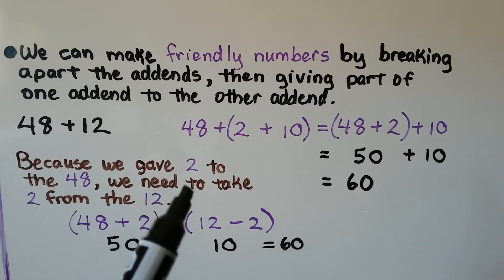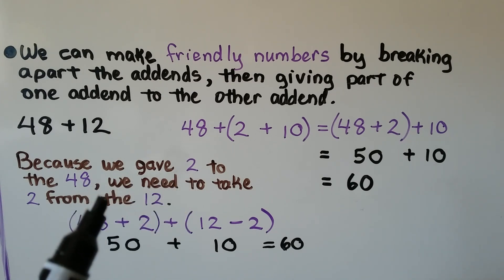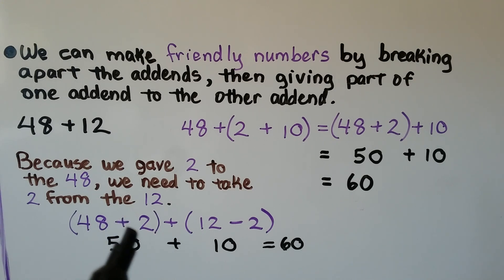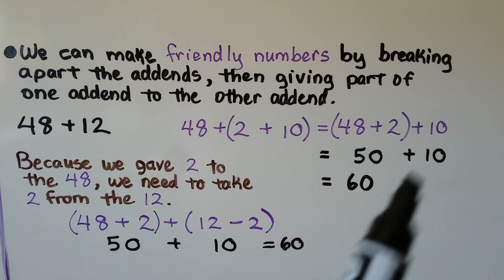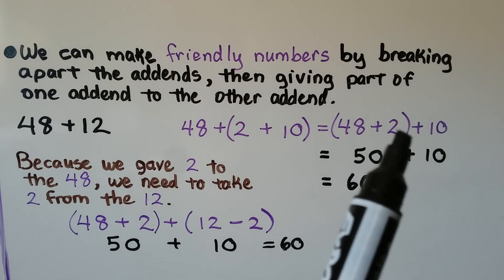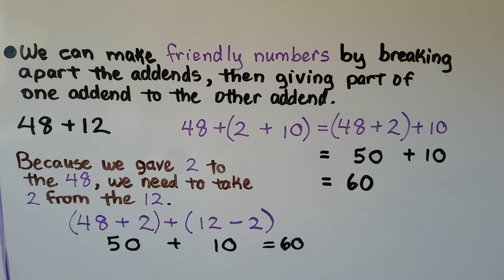Because we gave the 2 to the 48, we need to take 2 from the 12. So 48 plus 2 plus the 12 minus 2. That would give us a 50 plus a 10. That's how I got that 10. We regrouped it and gave the 2 to the 48. We can add that in our head. We can use mental math, and we know the sum is 60.